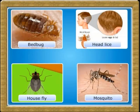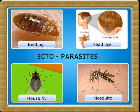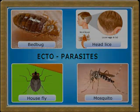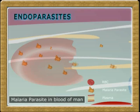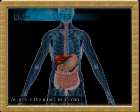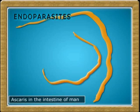Some examples of ectoparasites are bed bug, head lice, house fly, and mosquito. Some examples of endoparasites are the malaria parasite in the blood of man and ascaris in the intestine of man.